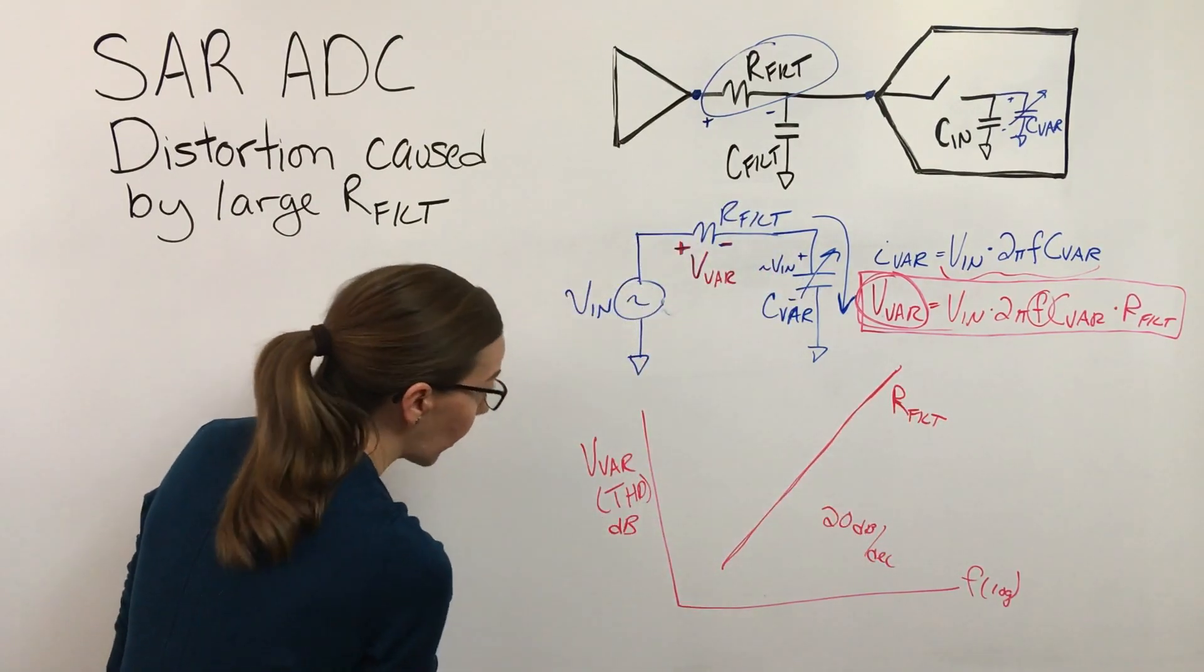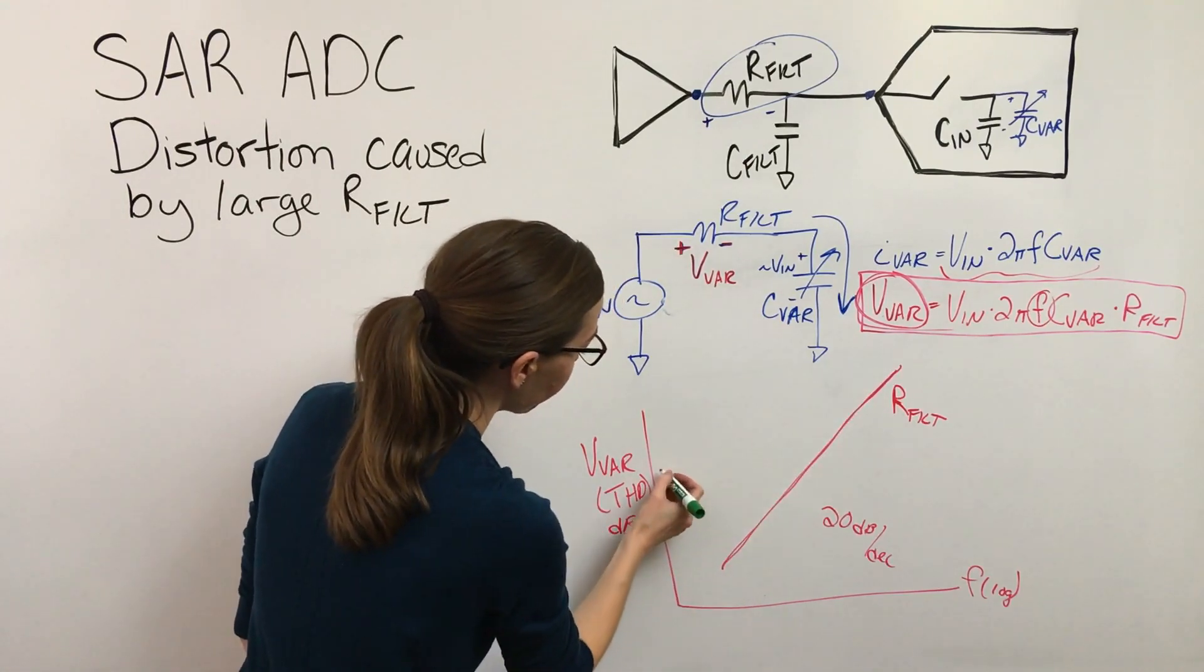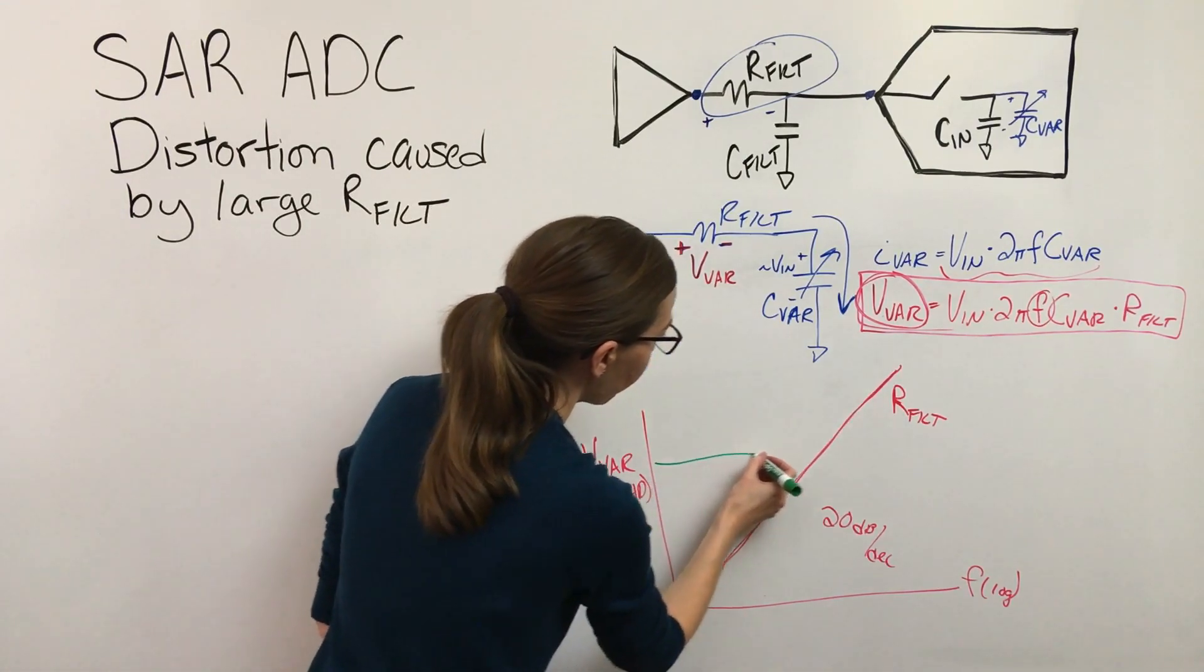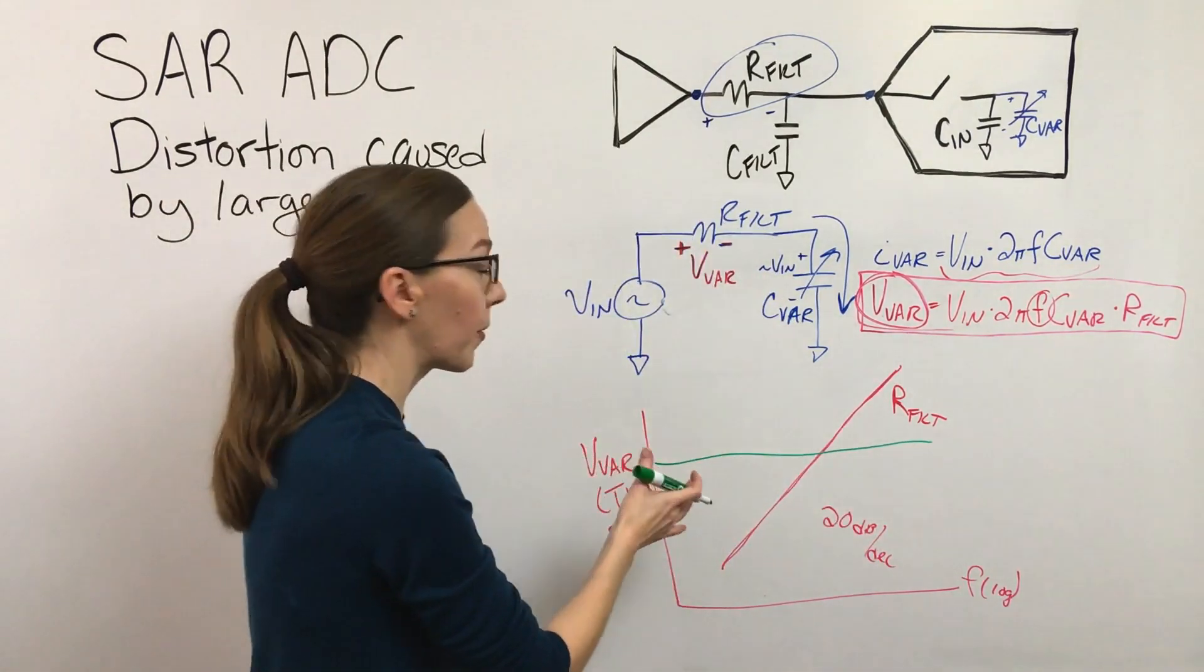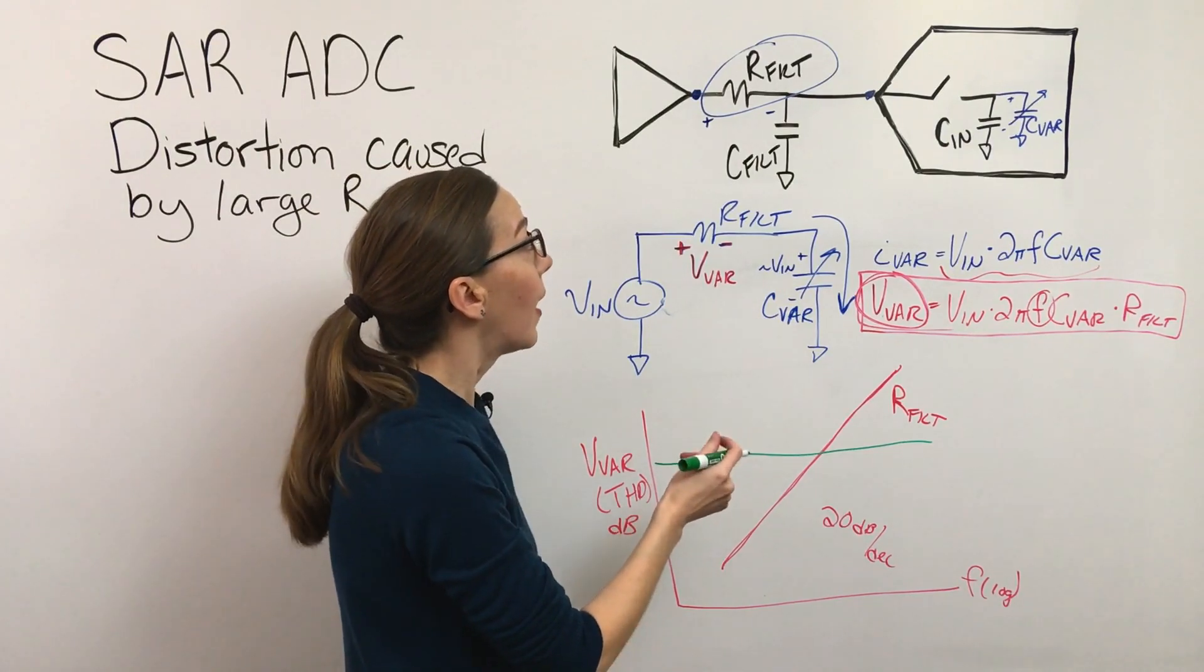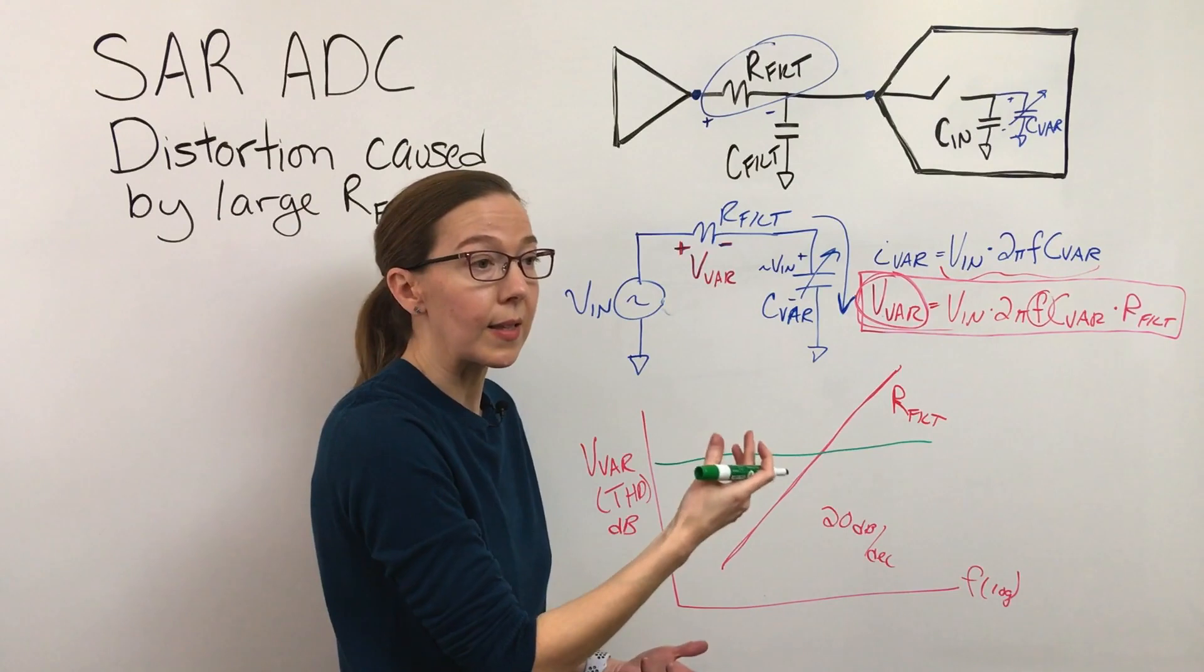But for a given resistor value, let's say we've got a curve like this for a resistor. As long as this curve falls below what the specified distortion parameter is for the ADC—